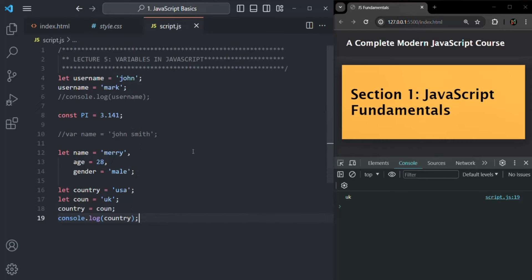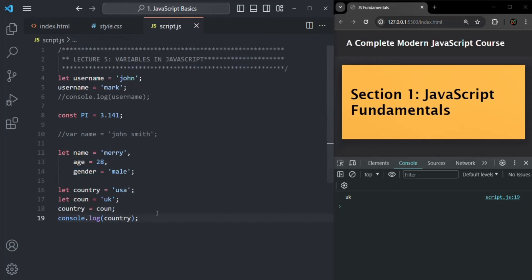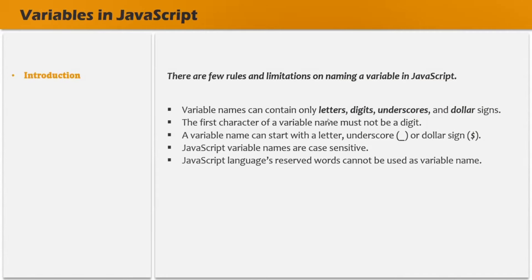While naming a variable, there are rules to follow. A variable name can only contain letters, digits, underscores, and dollar signs — no other special characters are allowed. For example, using a percentage sign in a variable name throws an error: unexpected token. Also, the first character of a variable name must not be a digit. It can start with a letter, an underscore, or a dollar sign, but not a number.